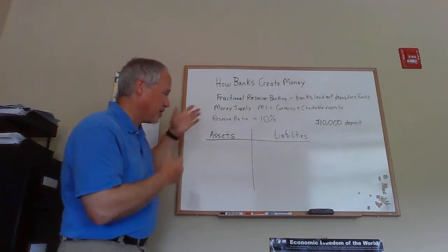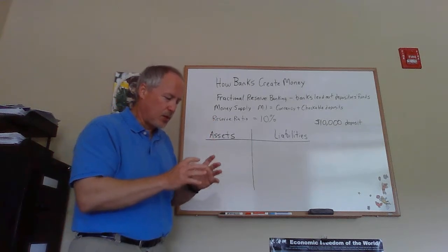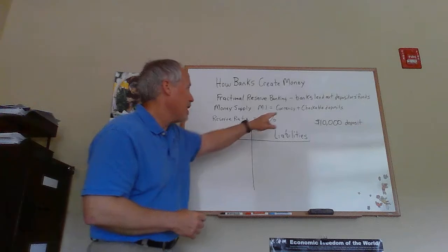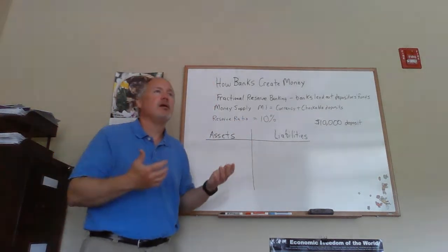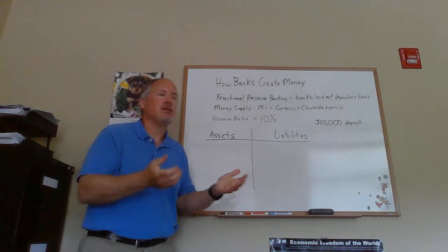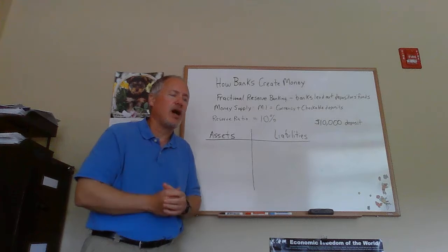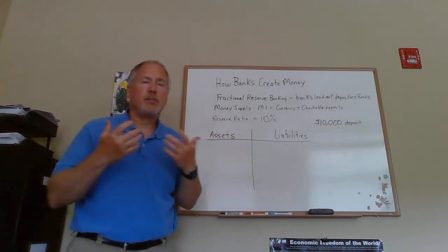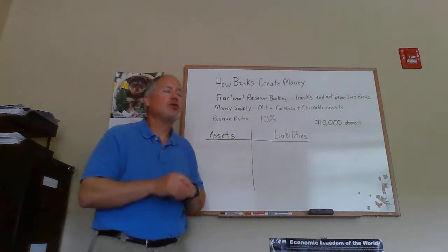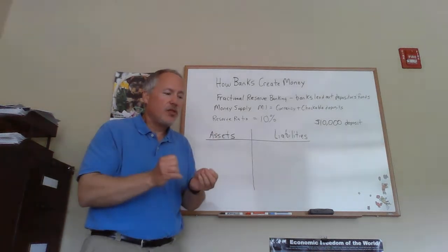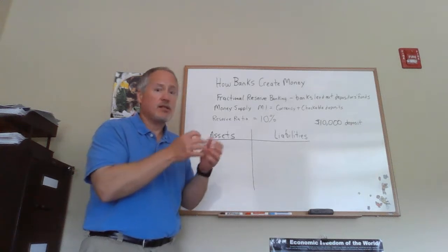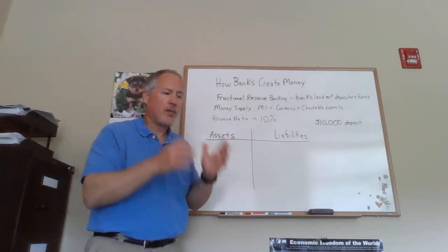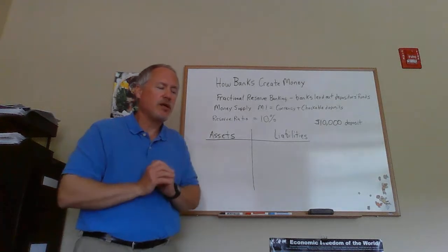The important thing to understand is why this happens. The most basic measure of the money supply is called M1. M1 involves currency — the total value of dollar bills in circulation — but we also include checkable deposits, meaning deposits in checking accounts at banks. If somebody has a checking account, they've taken cash to the bank and had it credited to their account.